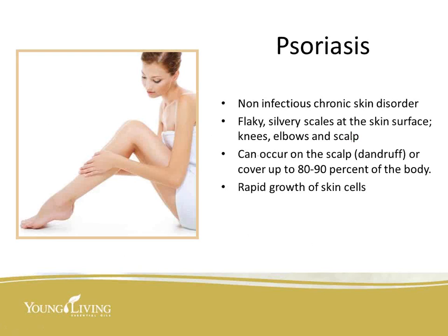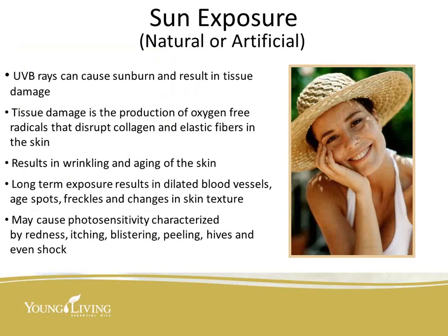Psoriasis is a non-infectious, chronic skin disorder. If you have psoriasis, you've probably had it for a while — I've even seen small infants have it. It's usually flaky, silvery scales on the skin surface, hanging around the knees, elbows, and scalp. It can occur like dandruff or cover up to 80 to 90 percent of the body. It's identified as rapid growth of skin cells, and the first thing I would start is an intestinal cleanse.